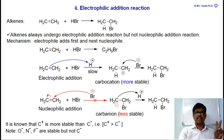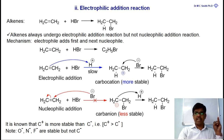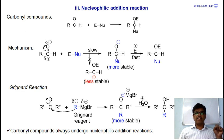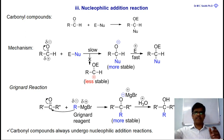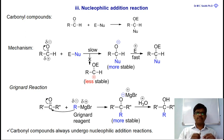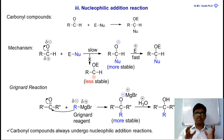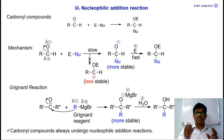Under addition reactions, the third type is nucleophilic addition reaction. Nucleophilic addition reaction is a reaction where the nucleophile is added first, followed by the electrophile. Carbonyl compounds undergo nucleophilic addition reactions. Carbonyl compounds are compounds that have a C=O group, such as aldehydes, ketones, esters, and acids.